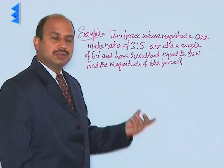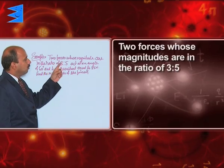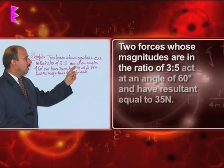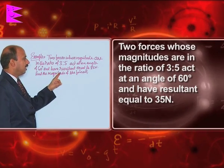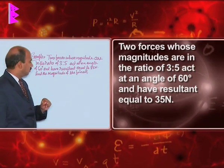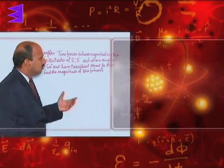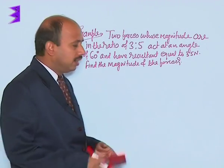Now see here, another question. Two forces whose magnitudes are in the ratio of 3 to 5 act at an angle of 60 degrees and have a resultant equal to 35 Newton. Find the magnitude of the forces. Very simple question based on the parallelogram law of vector addition.